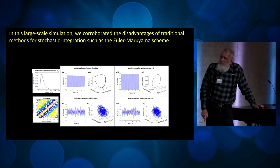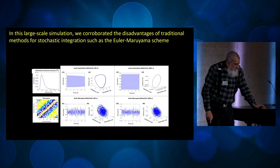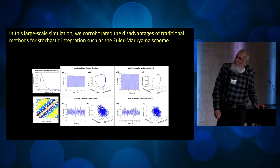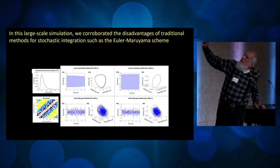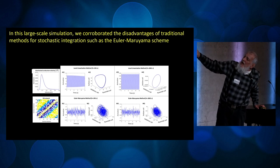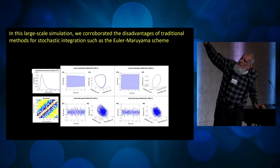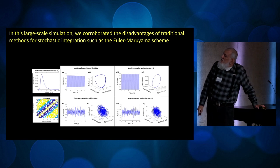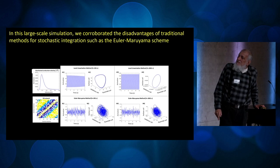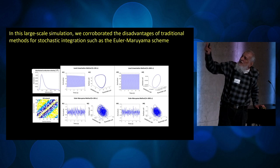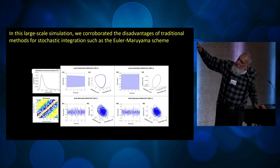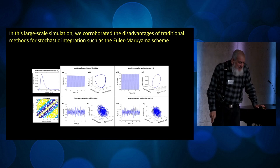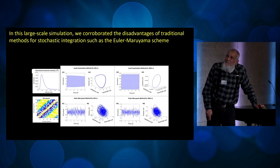Many methods used for integrating neural masses are very naive — for example, the Euler-Maruyama method. What I'm showing here is a simple simulation from the paper: when you use the correct method, local linearization, which preserves the Jacobian of the whole system, you can get a limit cycle. But if you use Euler-Maruyama or other methods, what you get out is a mess. So this is an added bonus of this toolbox.